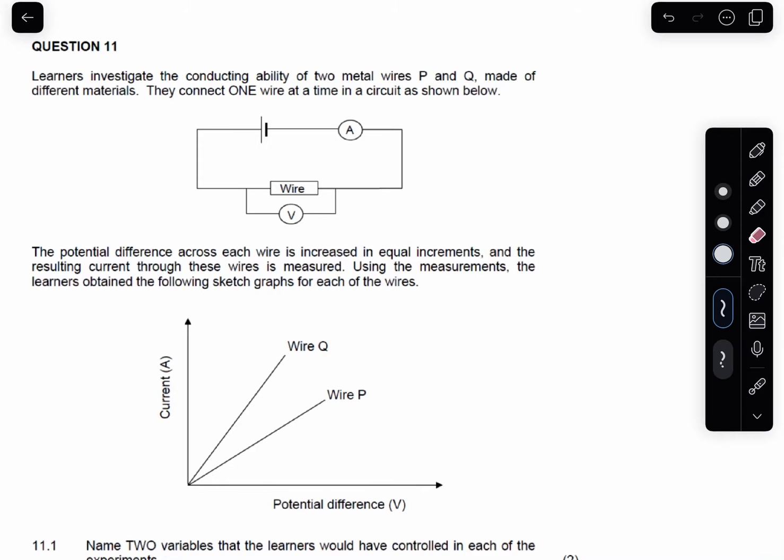So guys, now it says learners investigate the conducting ability of two metal wires, which is metal wire P and Q made from different materials. So here, if you see here, it says they connect one wire at a time as shown in the circuit below.